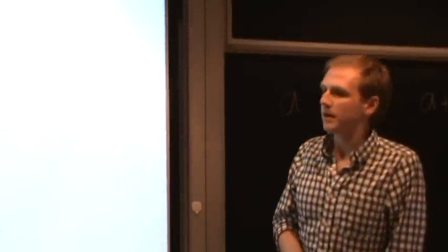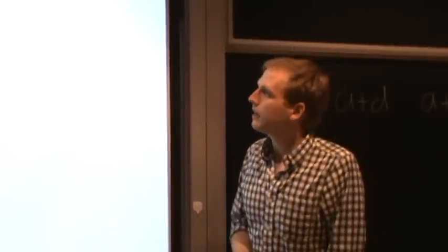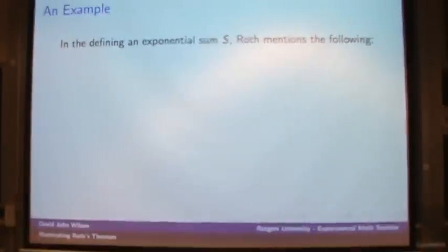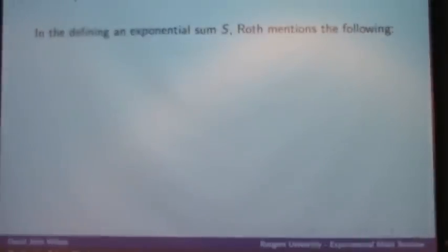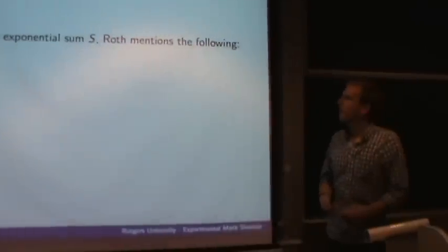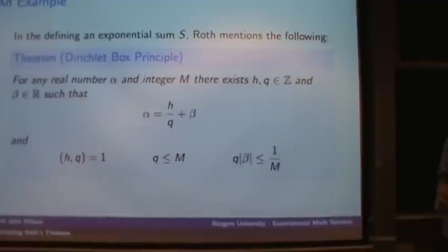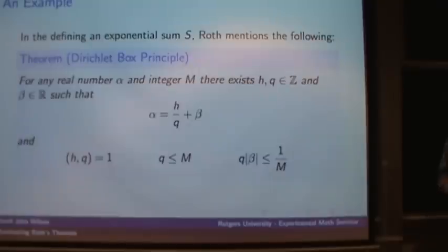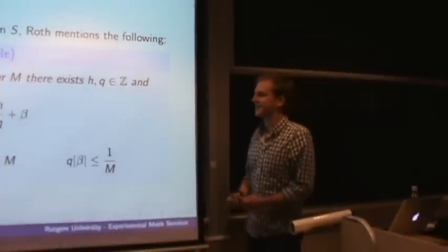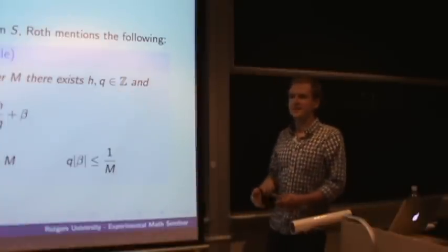So to give you a simple example of what I mean by the expansion of these statements, in Roth's paper he mentions he defines an exponential sum which is just called S in the paper. It's to do with the Hardy-Littlewood method and it's a generalization on a discrete Fourier transform. But in defining this sum, Roth just briefly mentions that for any real number alpha and any integer m, there exists h and q integers and a real number beta such that alpha equals h over q plus beta, where h over q are coprime, q is less than or equal to m, and q times absolute value of beta is less than or equal to 1 over m. And he mentions this in one sentence with no explanation. And when I saw it I was like, that's not immediately obvious why that's true.